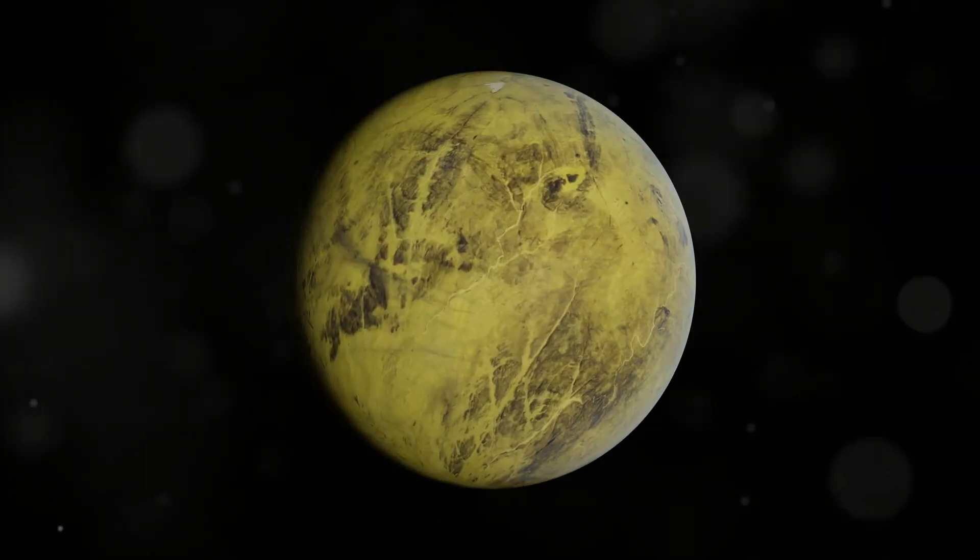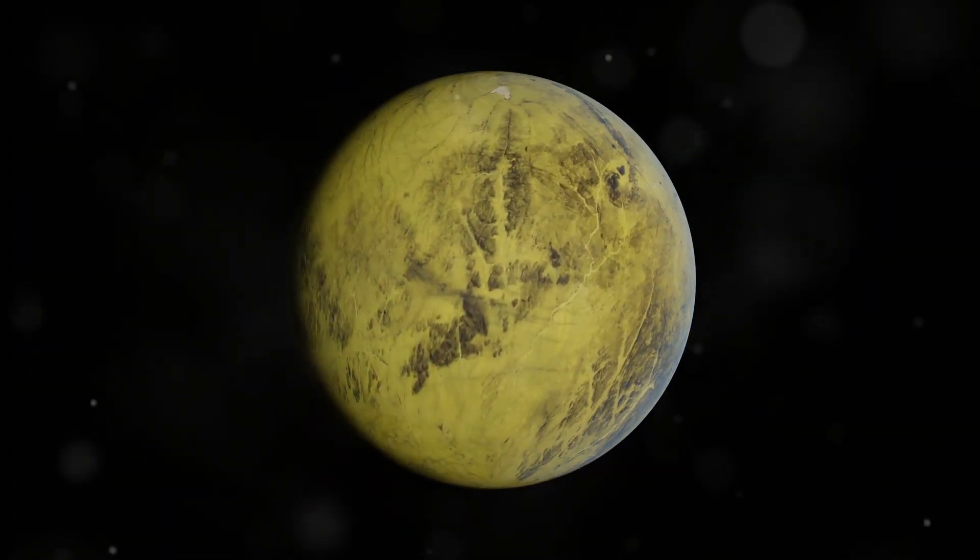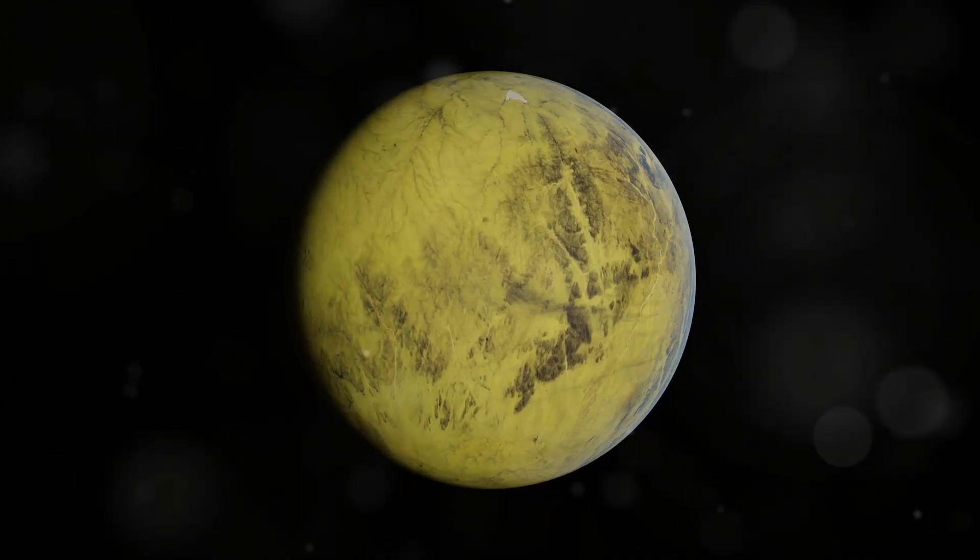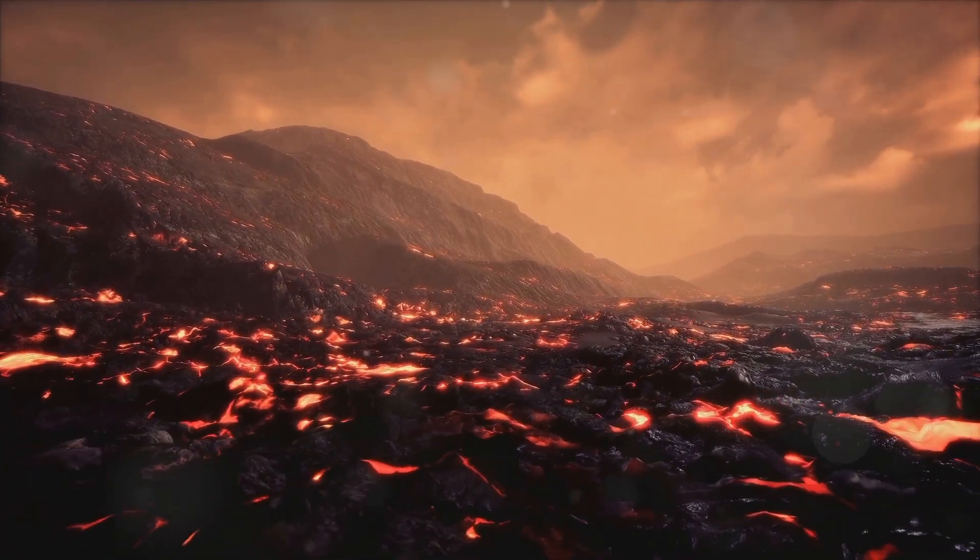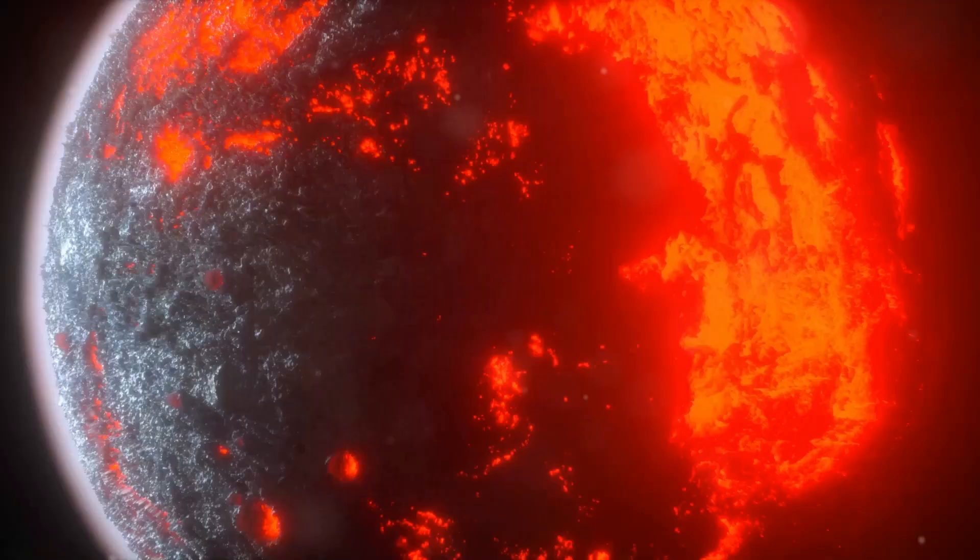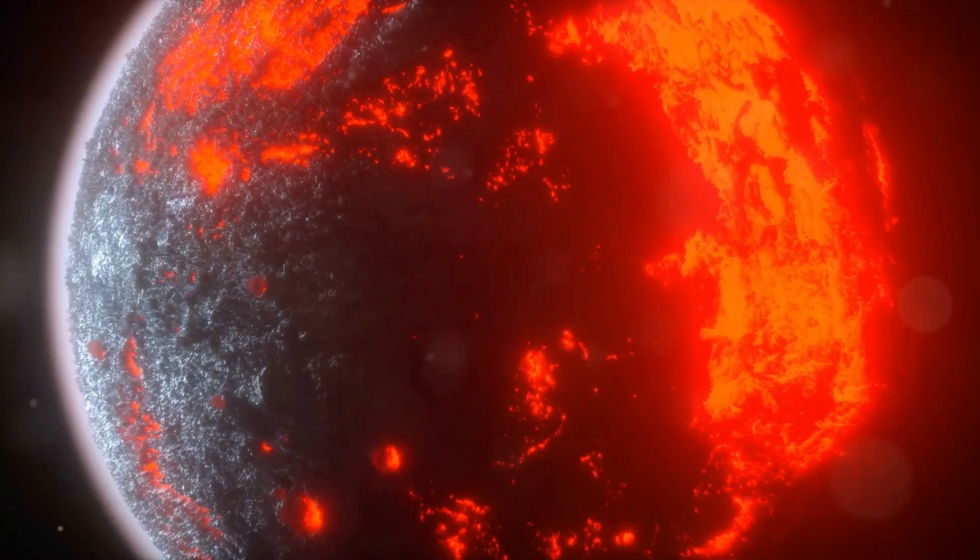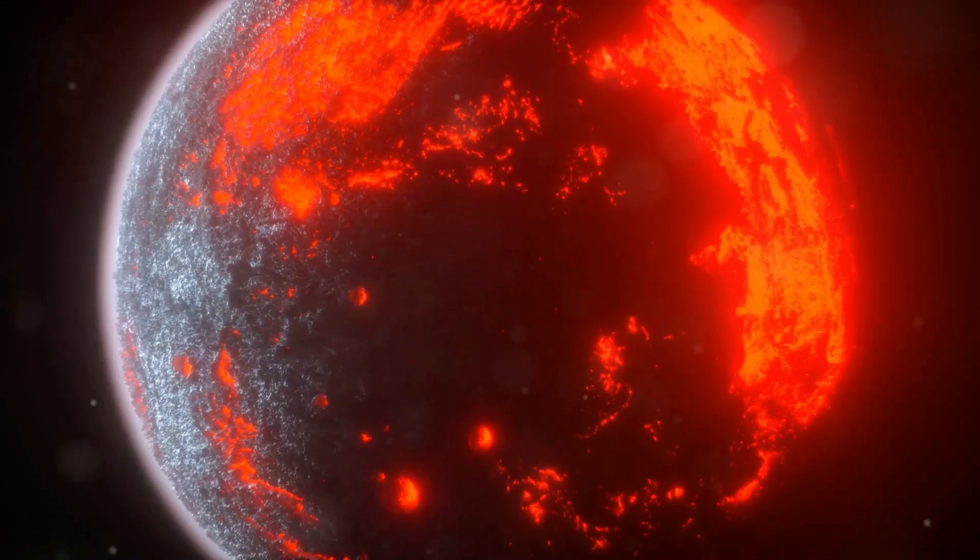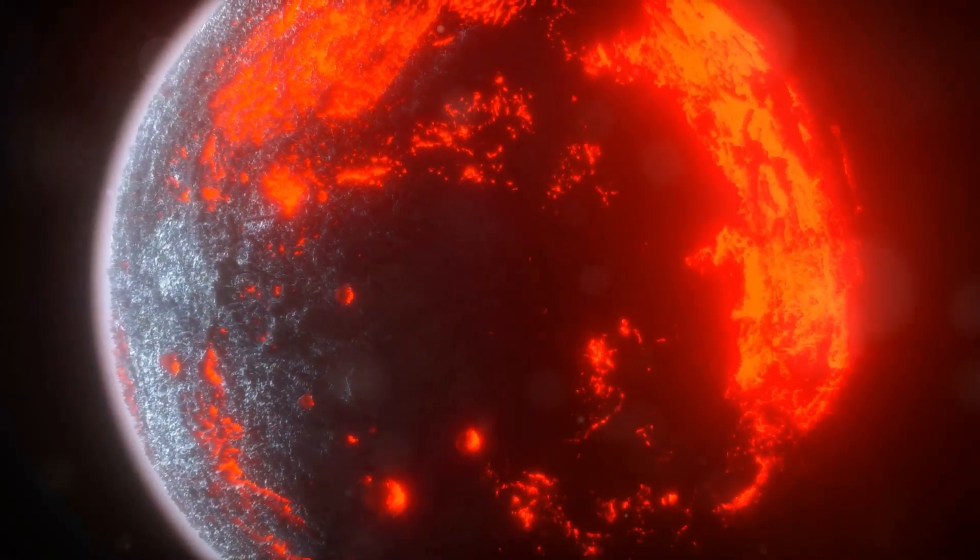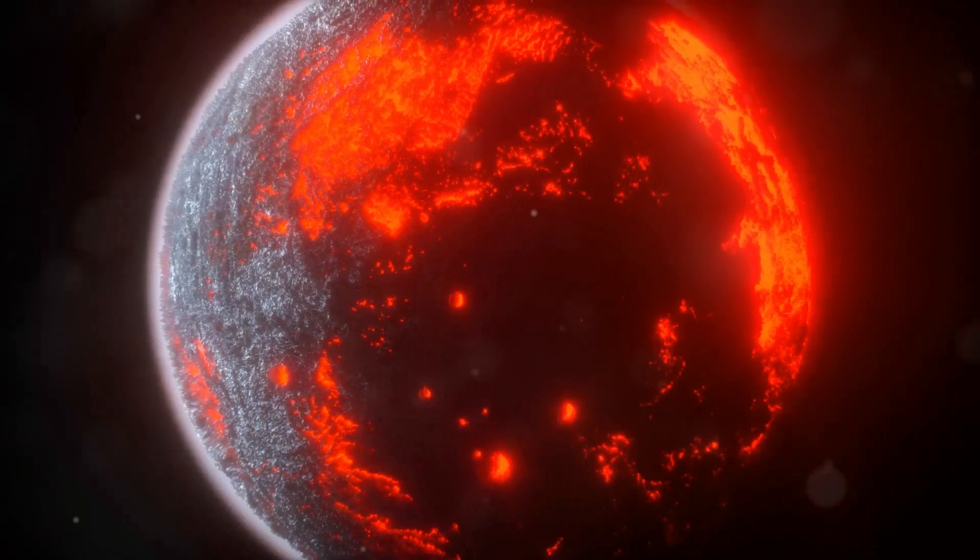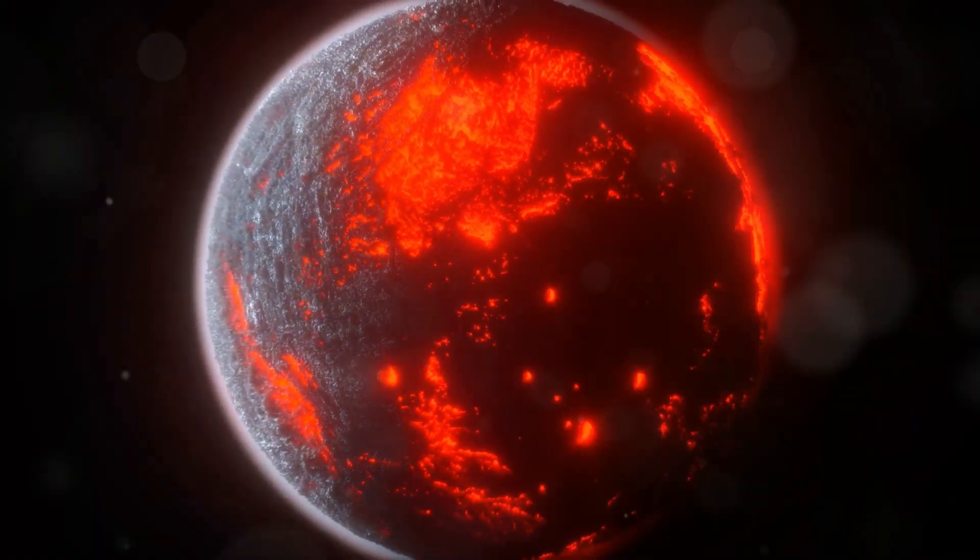Our next stop is Korot 7b, a super-Earth located 489 light-years away in the constellation Monoceros. This planet is a volcanic nightmare, a hellscape of molten rock and fire. Korot 7b is tidally locked to its star, with one side always facing the searing heat. The surface temperature on the day side of this planet is estimated to be a scorching 4,700 degrees Fahrenheit, hot enough to melt rock.